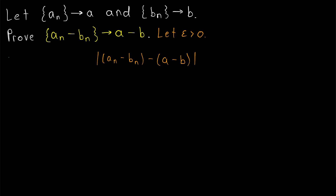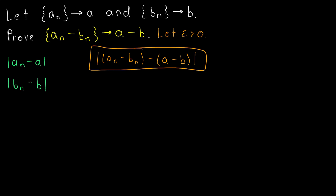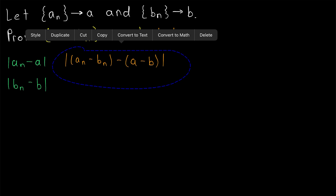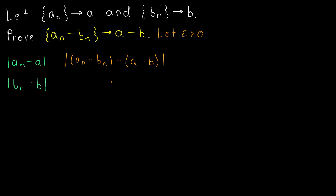By definition of a convergent sequence, since an converges to a, we can make the absolute value of an minus a arbitrarily small, and similarly, we can make the absolute value of bn minus b arbitrarily small. Then, if we can transform this expression into something consisting of these two quantities, we should be able to make that arbitrarily small.